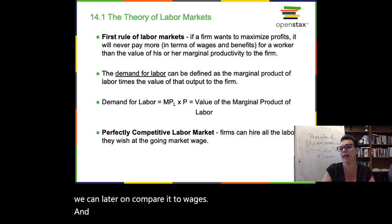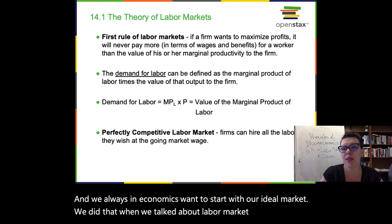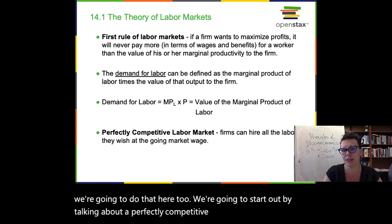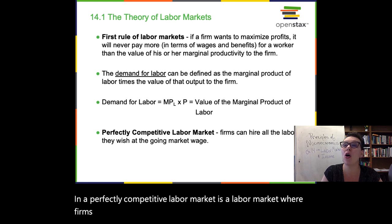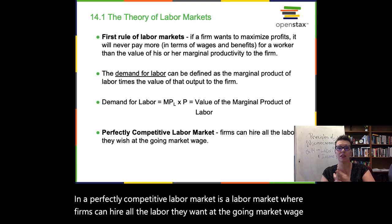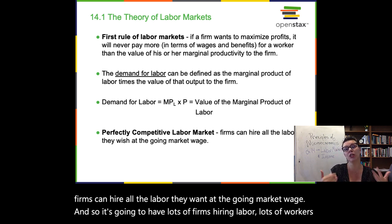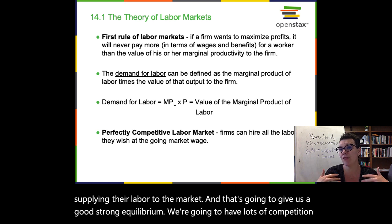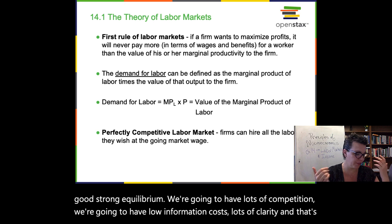We always want to start with our ideal market, and we're going to start out by talking about a perfectly competitive labor market. A perfectly competitive labor market is one where firms can hire all the labor they want at the going market wage. It's going to have lots of firms hiring labor, lots of workers supplying their labor to the market — giving us a strong equilibrium, lots of competition, low information costs, and lots of clarity.